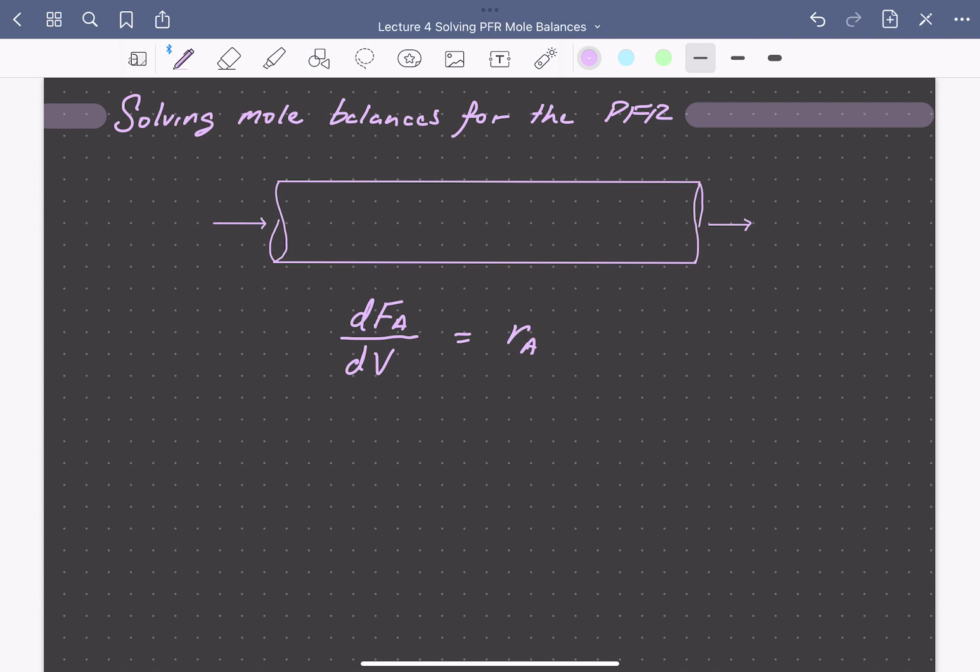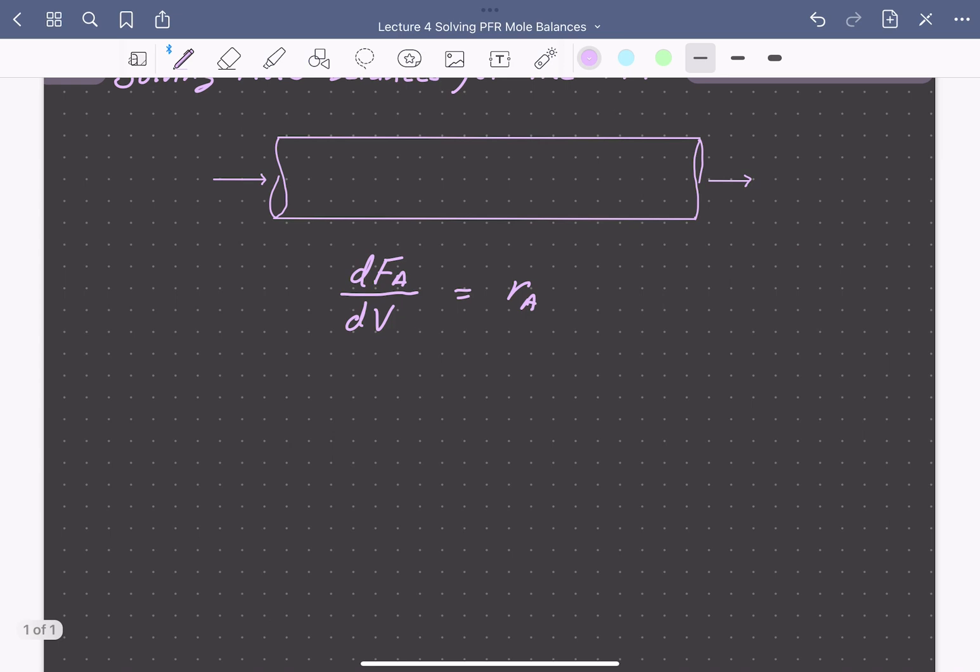Let's solve this to get a concentration profile for a simple situation. We'll look at the case of a first order irreversible reaction: a reaction A going to B with a rate expression for the rate of consumption of A equal to a rate constant k times the concentration of A.